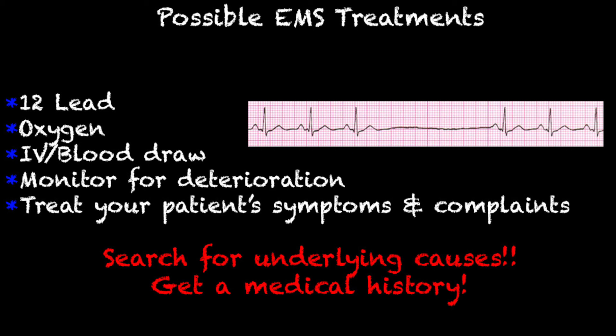Does this patient have sick sinus syndrome? Is the rhythm slow, fast, or normal? If the rhythm is slow and the patient is symptomatic, obviously we're going to go to options like atropine, transcutaneous pacing, things of that nature. If it isn't bradycardic, the main thing is to just treat the patient's symptoms and complaints. Search for those underlying causes and get a really good medical history, because many times these patients — even without sick sinus syndrome — if they have periods where they're missing three or more beats, they usually become candidates at the hospital for a pacemaker.